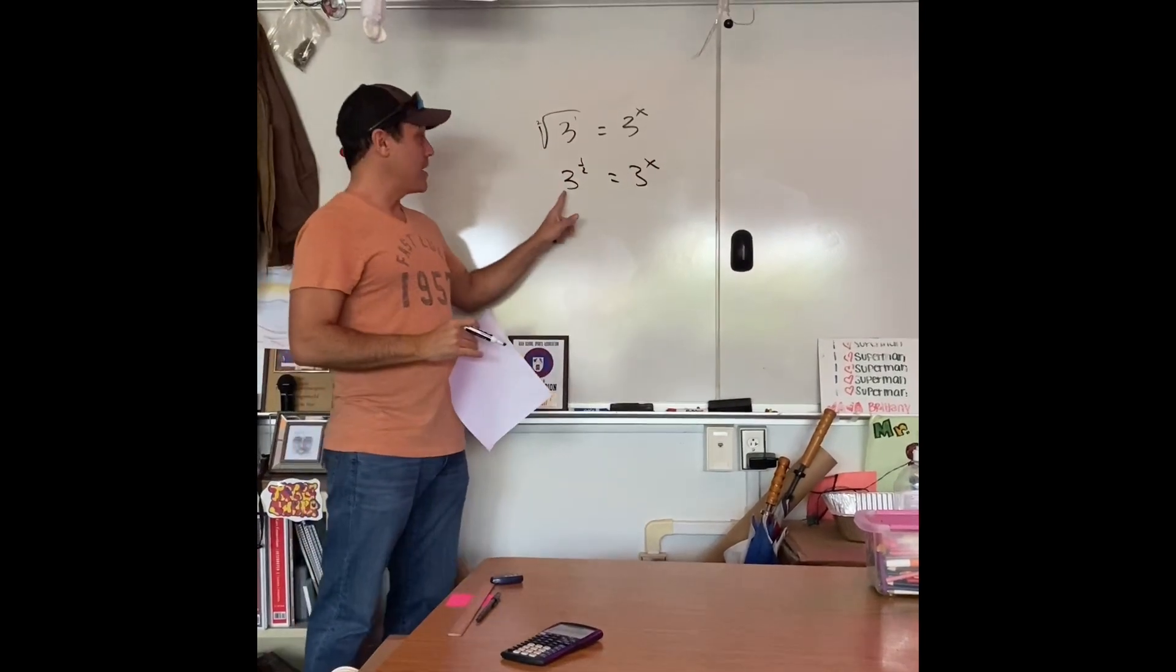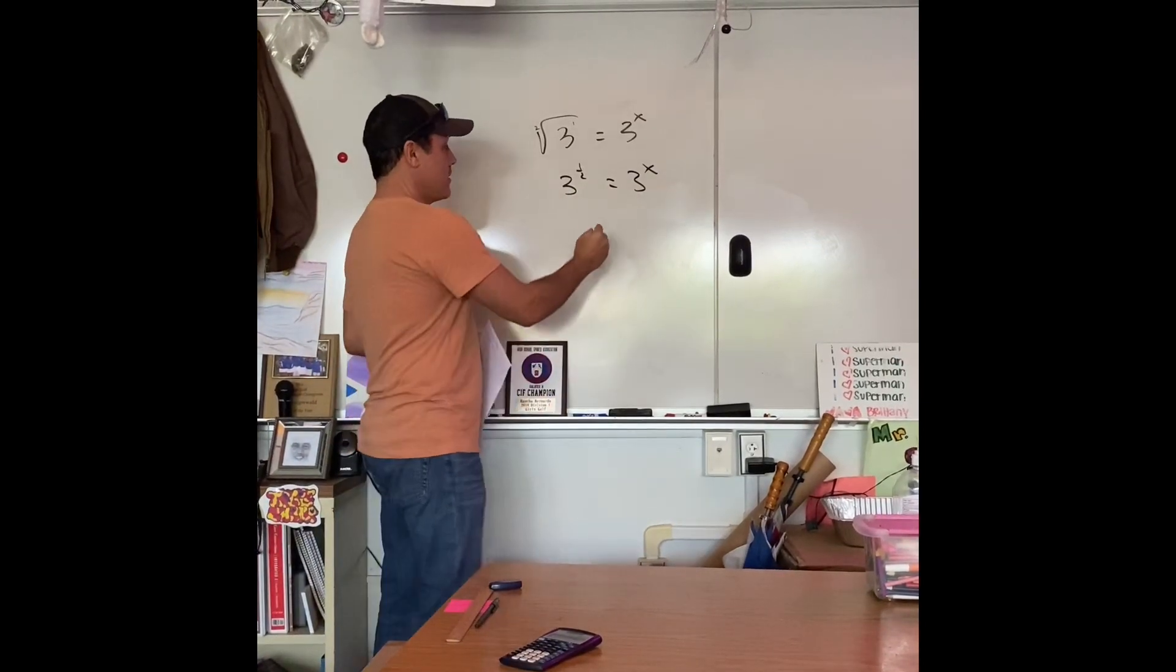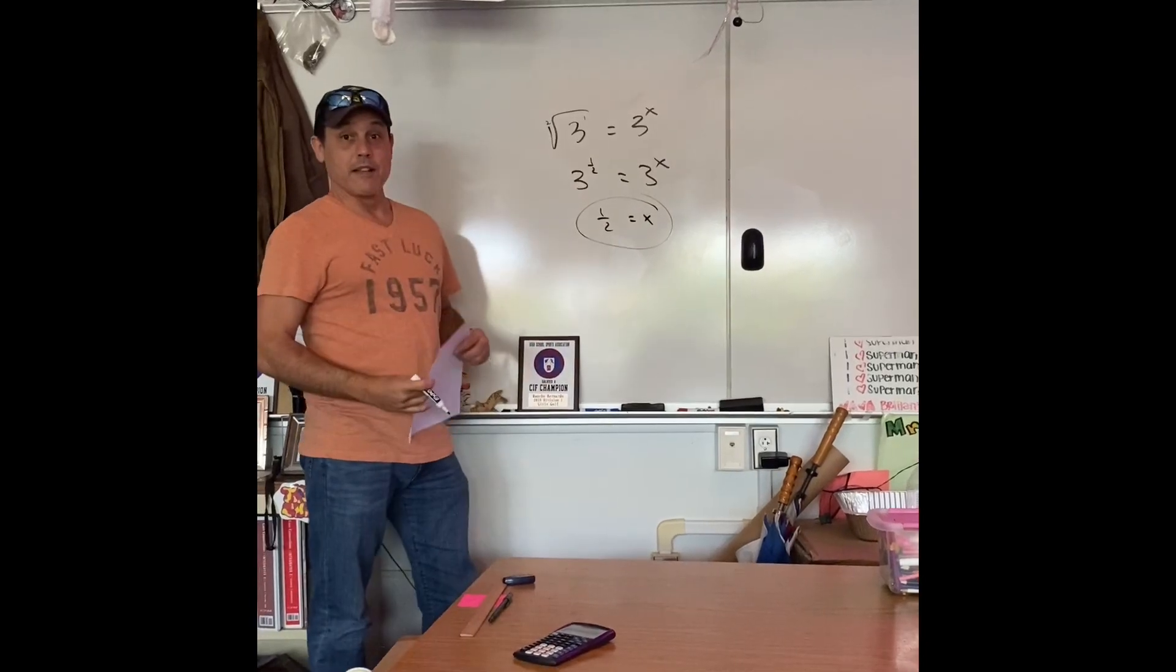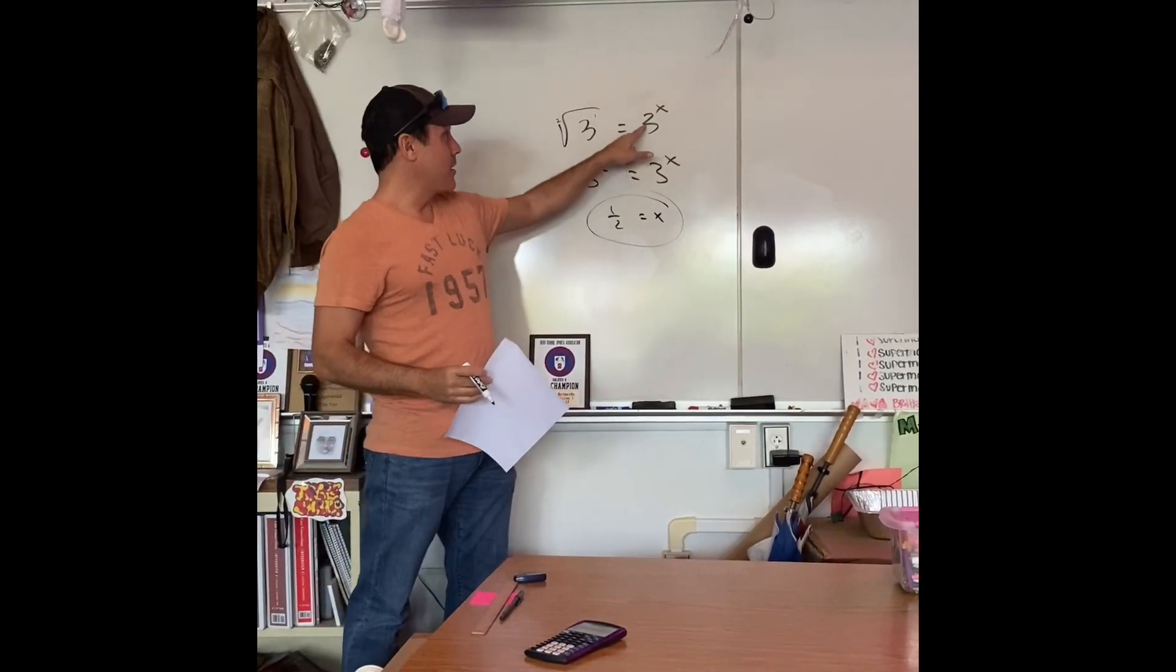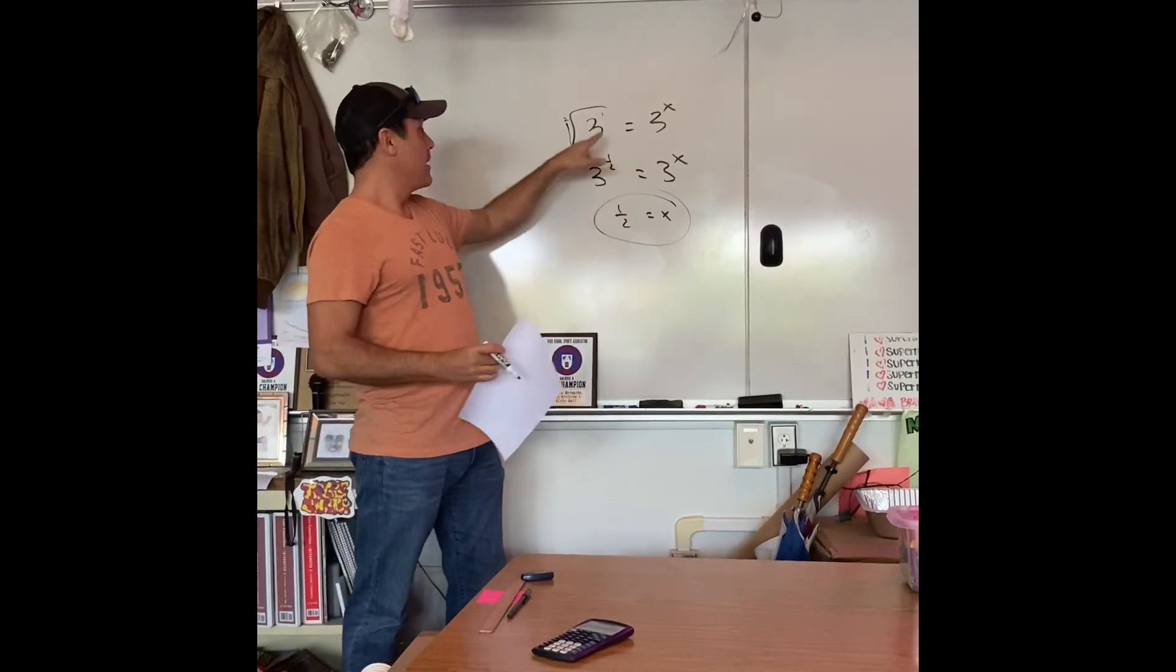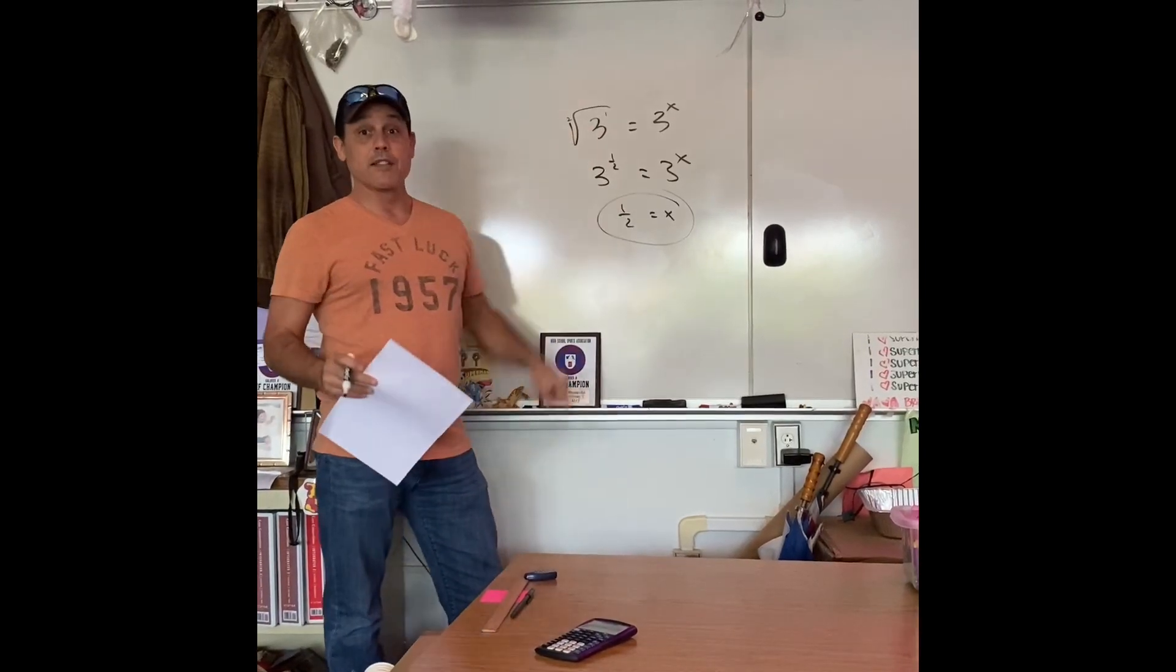Whenever you have the same base, all you need to do is set the exponents equal to each other. So, bingo, there's our answer. You want to make sure, take 3 to the 1 half, and see if we put that in the calculator, and then take the square root of 3, you'll get the same number, okay?